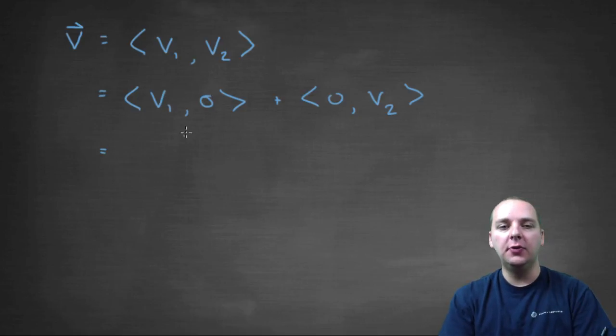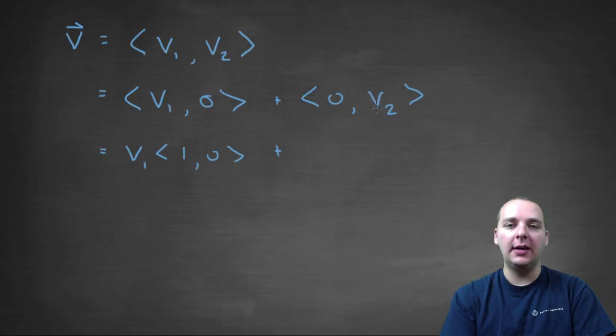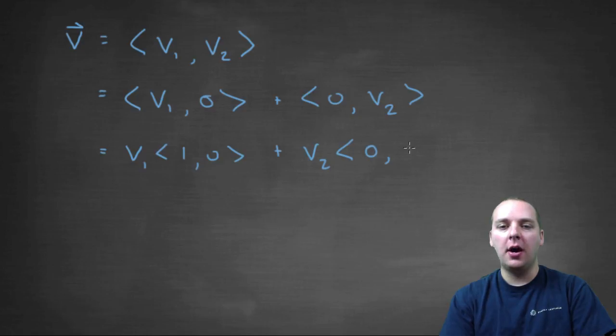From the first vector, you could factor out a scalar v1: v1 times the vector <1,0>, plus factor a v2 out of the second vector, and you'd have leftover <0,1>. And we're done.